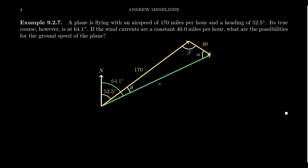So when it comes to these headings, as we decided upon earlier, these headings are always with reference to a clockwise rotation from north. So if the plane has an airspeed of 170 and a heading of 52.5, that means the airplane's intended path will be this vector you see right here. Its measurement from north is 52.5 degrees. The length there would be 170.